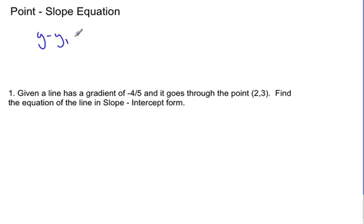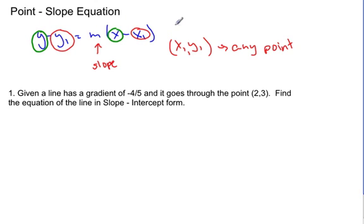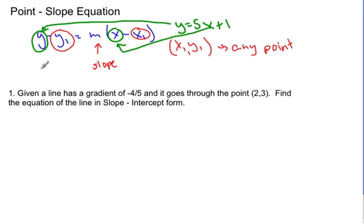y minus y₁ equals m times (x minus x₁). In this equation, m is the slope because I know I need a slope. And then y₁ and x₁ — well, I also need a point, any point — this is my any point. Everyone often asks me: what is this x and y? When you have a linear equation you often get things that look like y equals 5x plus 1, and it has an x and a y. That ends up being that y and that x.